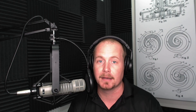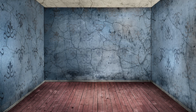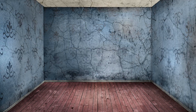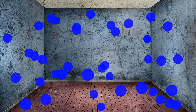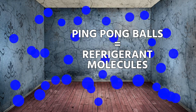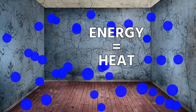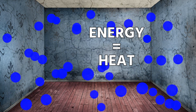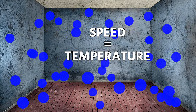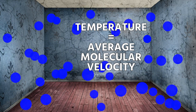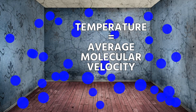Let's talk about this in metaphor. Imagine the room you're in right now — it's got four walls and a ceiling. Now imagine that room is full of ping pong balls, and these ping pong balls bounce around perpetually — they're always bouncing. These ping pong balls signify molecules. The energy that these molecules contain that causes them to bounce around — that's heat. But the speed that these molecules or ping pong balls are moving at — that is temperature. In fact, temperature literally is average molecular velocity.